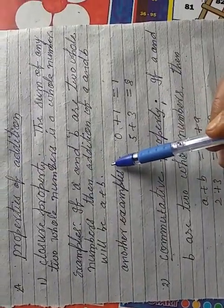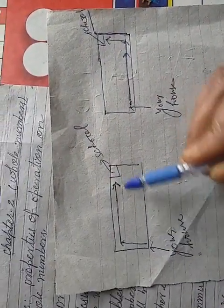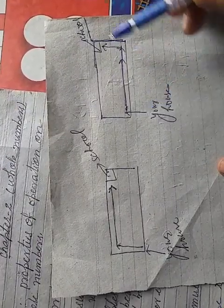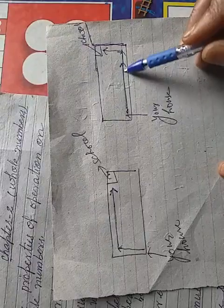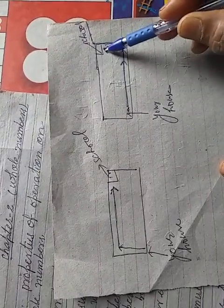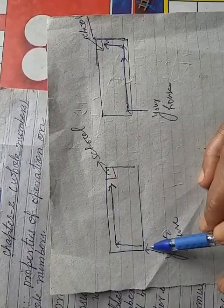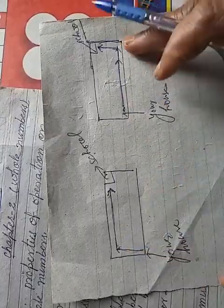We can explain this example by one diagram. Suppose you want to go to the school and your house is here and school is here. And this is the second diagram, your house is here and school is here. So dear student, we can move in this way and we have to reach your destination school.